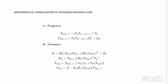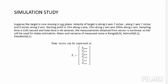The state prediction and estimation part of the Kalman filter can be expressed as follows. Suppose we have a question: the target is moving in the XY and Z plane. The velocity of the target is 7 meters per second along the X axis, 7 meters per second along the Y axis, and 0 meters per second along the Z axis. The starting point is 15 meters along X, 15 meters along Y, and 200 meters along the Z axis. The sampling time is 0.05 seconds and total time is 40 seconds.